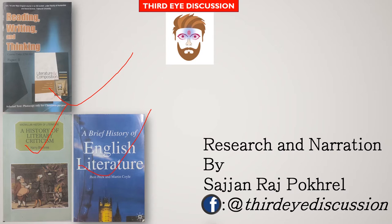Let me make it clear that there are two papers — you have to appear for two examinations for BA first year major English. The first paper will be set from Book 1, that is Reading, Writing and Thinking. The second paper will be set from Book 2 and Book 3, that is from A History of Literary Criticism and A History of English Literature.